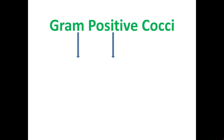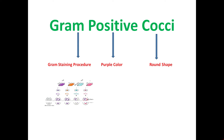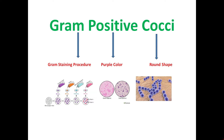The word gram-positive cocci is basically made up of three words: gram, positive, and cocci. Gram means the gram staining procedure, positive means the purple color, and cocci means round in shape.